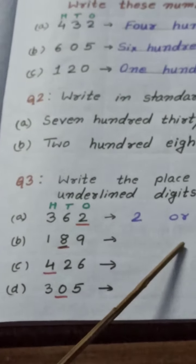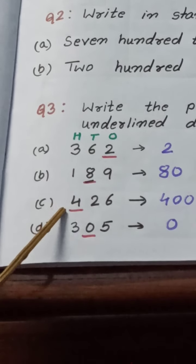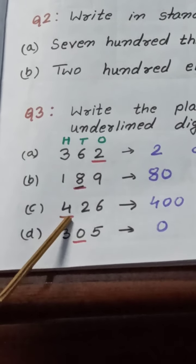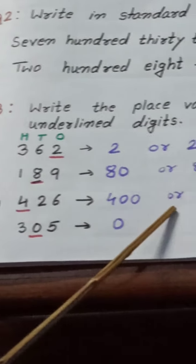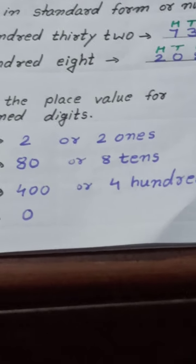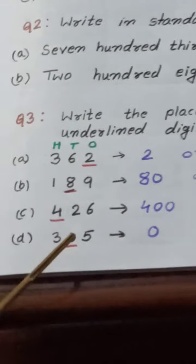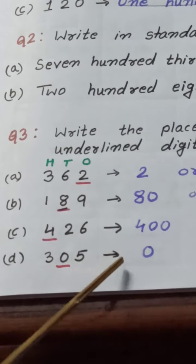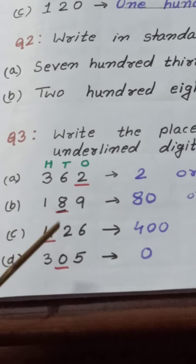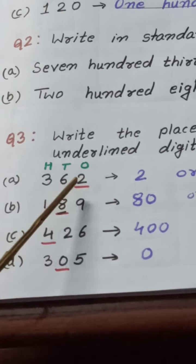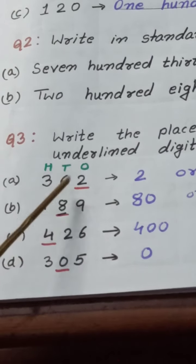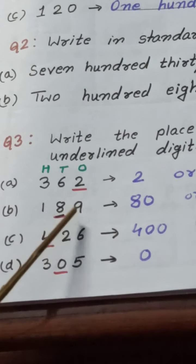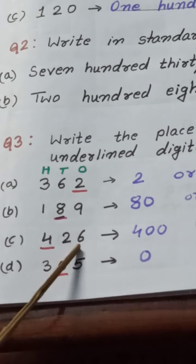Or you can write 8 tens. Question C is 426 — the place value of 4 is 400, or you can write 4 hundreds. Now we have to find the place value of 0. Children, remember: the place value of 0 in any number always will be 0. And one more thing: the place value of whichever digit is standing on the ones place will always be that same number — like the place value of 6 is only 6.